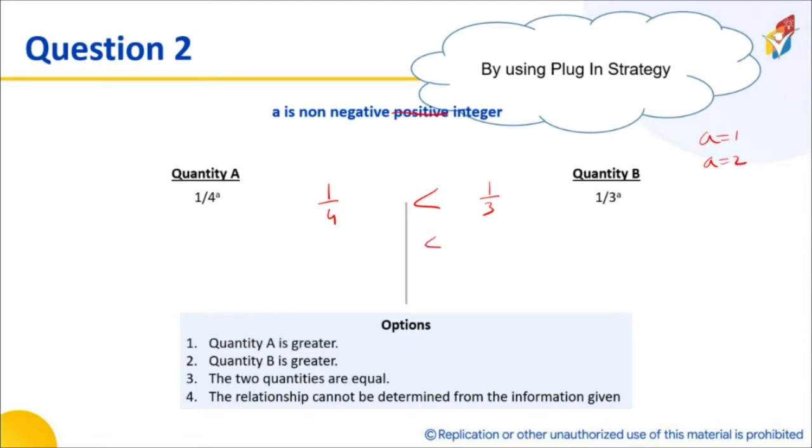This quantity on the left-hand side would be 1 by 16, this would be 1 by 9. That would have given you enough evidence to go ahead and mark the answer. Can I do it using division method? Possibly yes, but sometimes the division itself might be complicated.